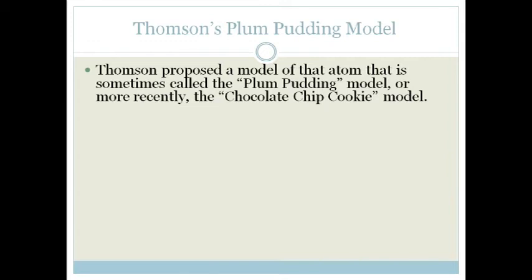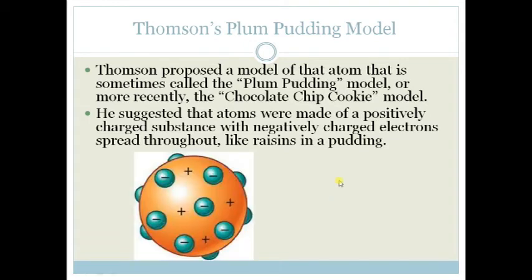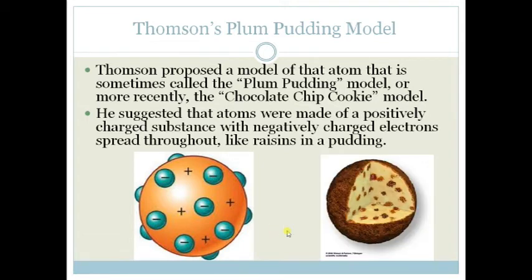He proposed a model of the atom that's sometimes called the plum pudding model, or more recently, the chocolate chip cookie model. He suggested that atoms were made of a positively charged substance with negatively charged electrons spread throughout, much like raisins in a pudding.